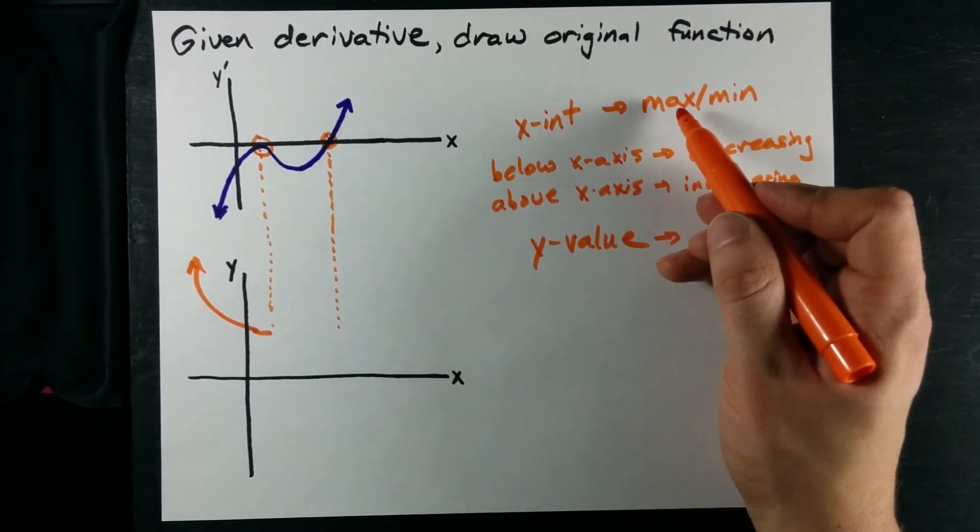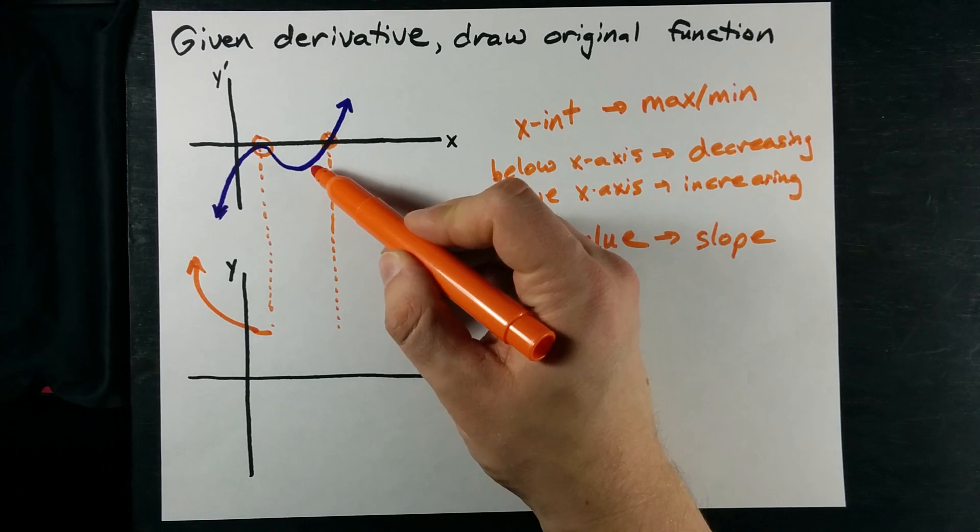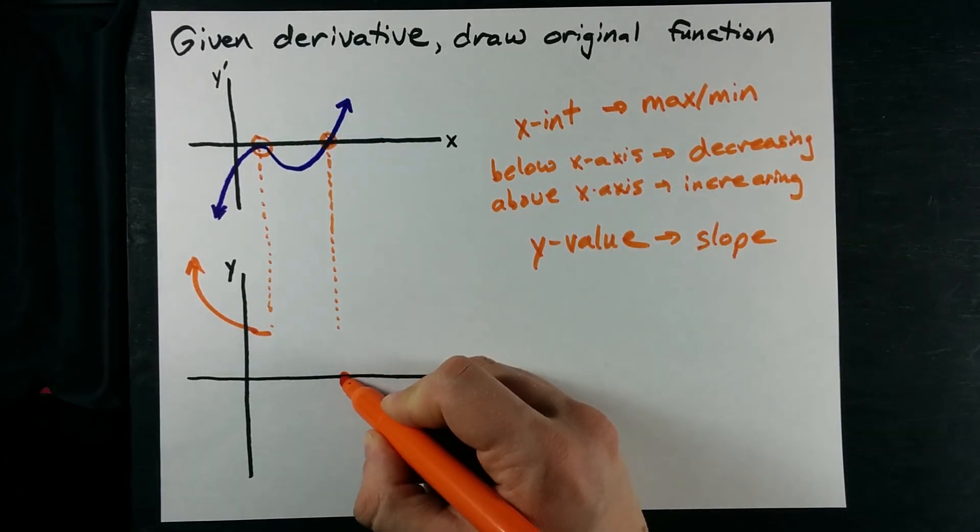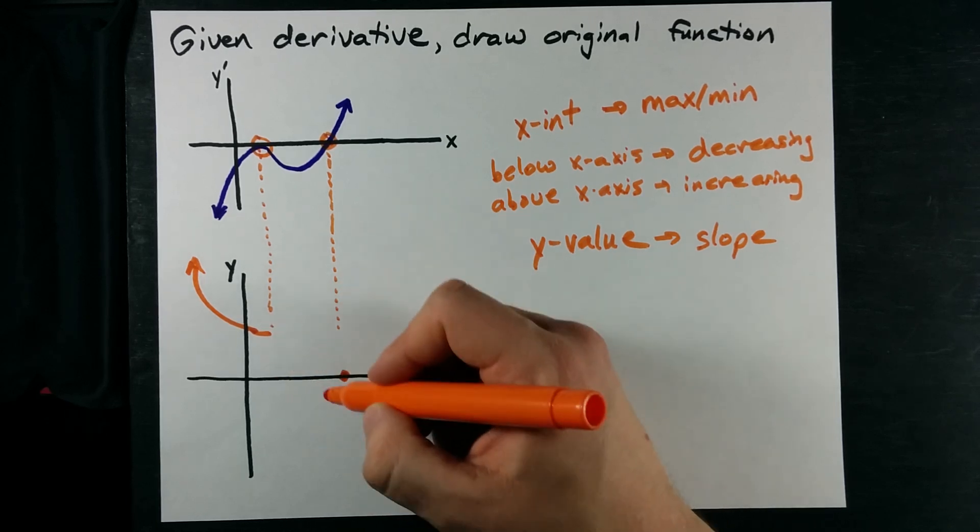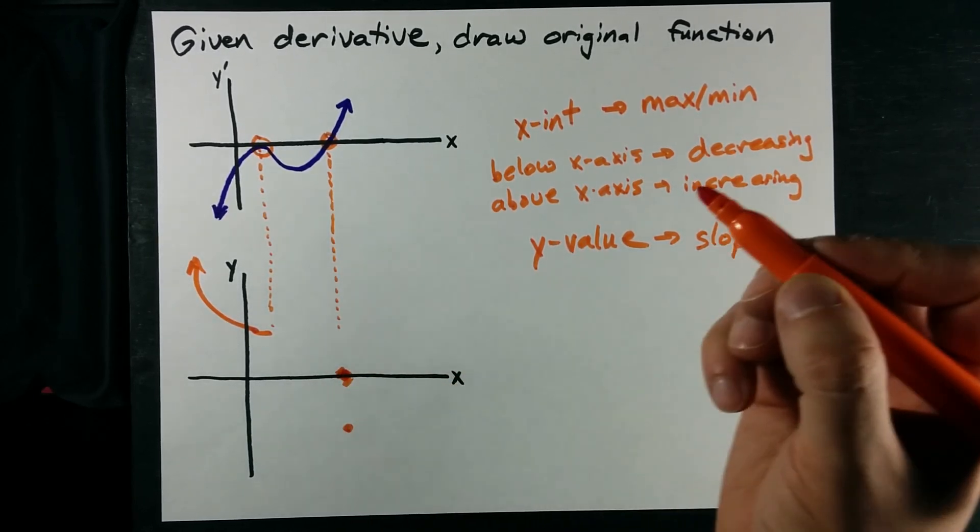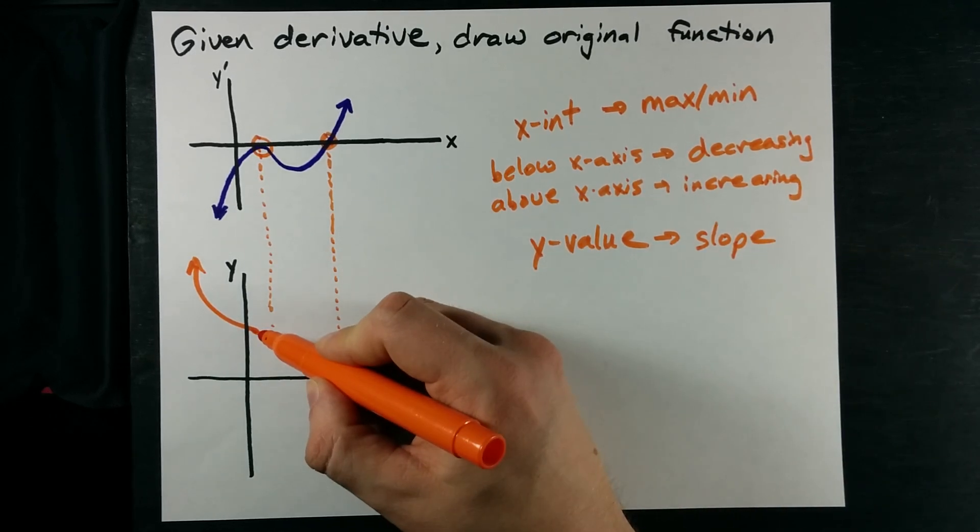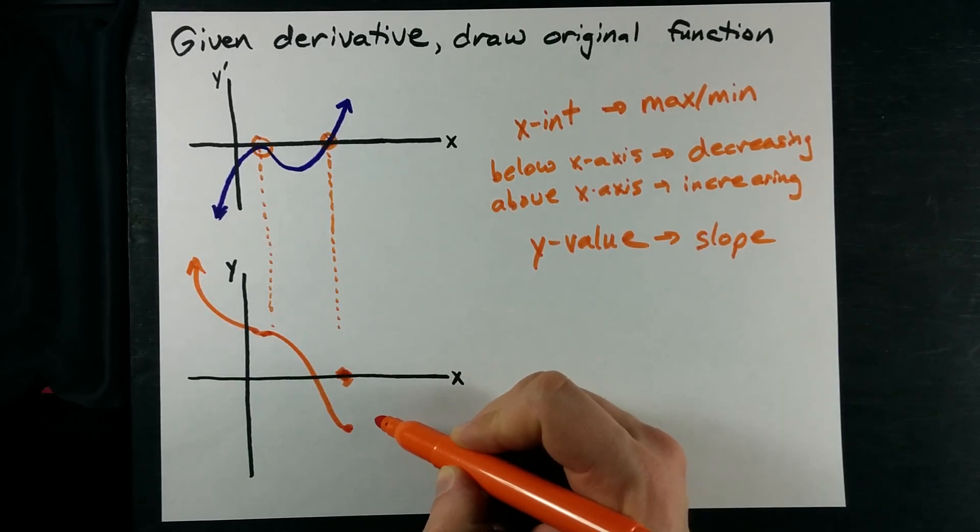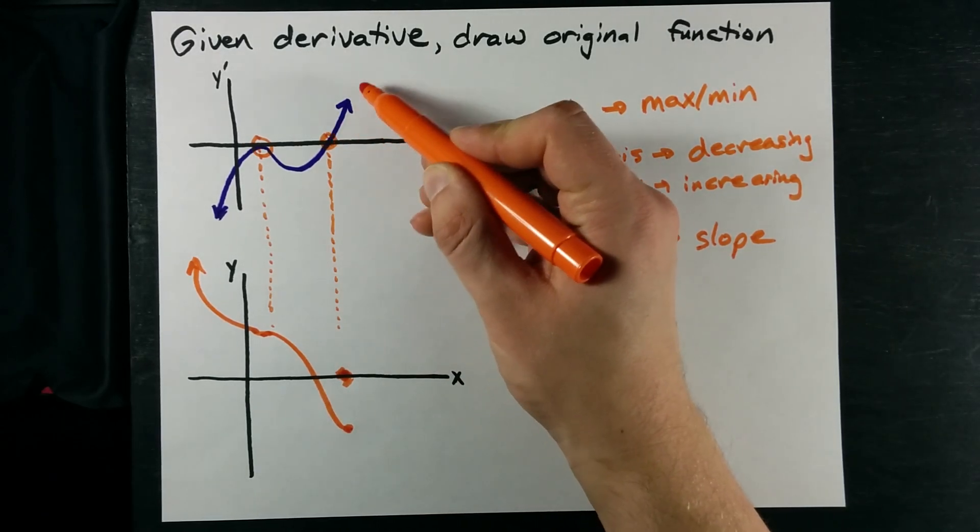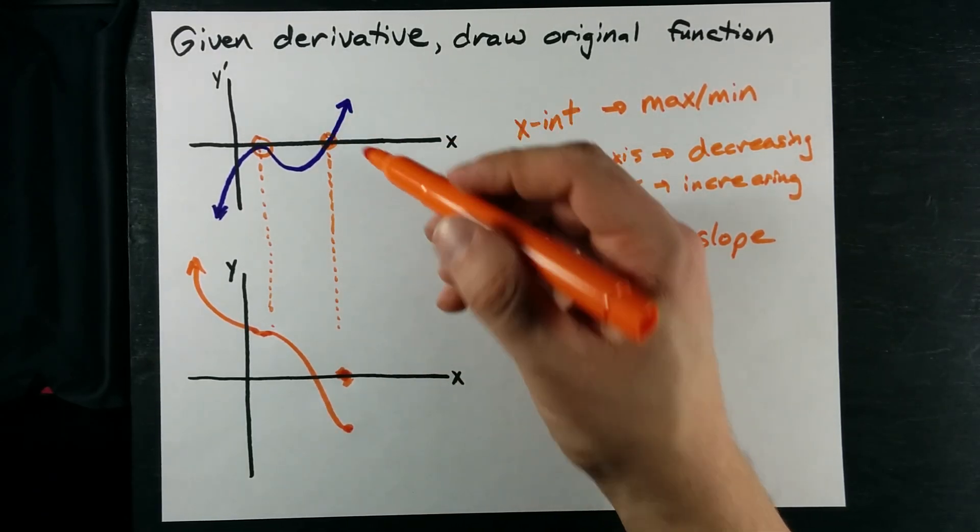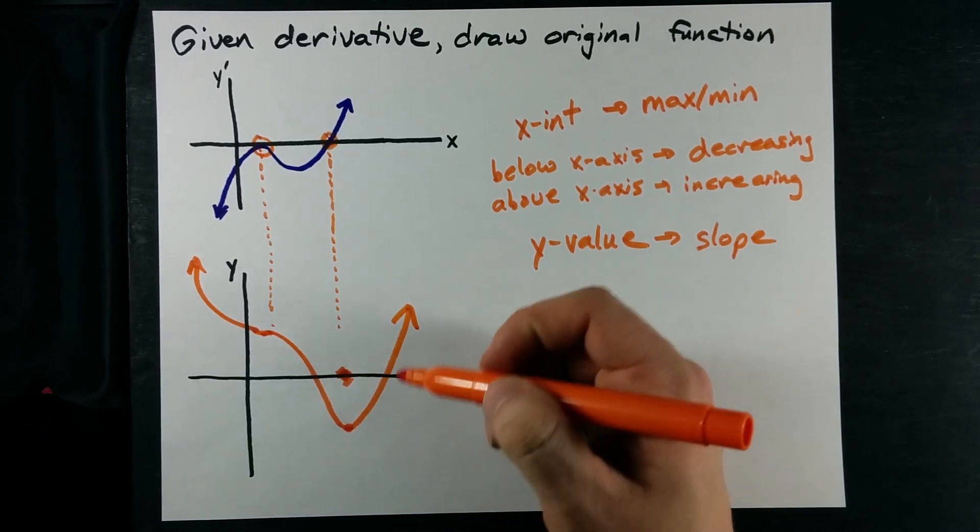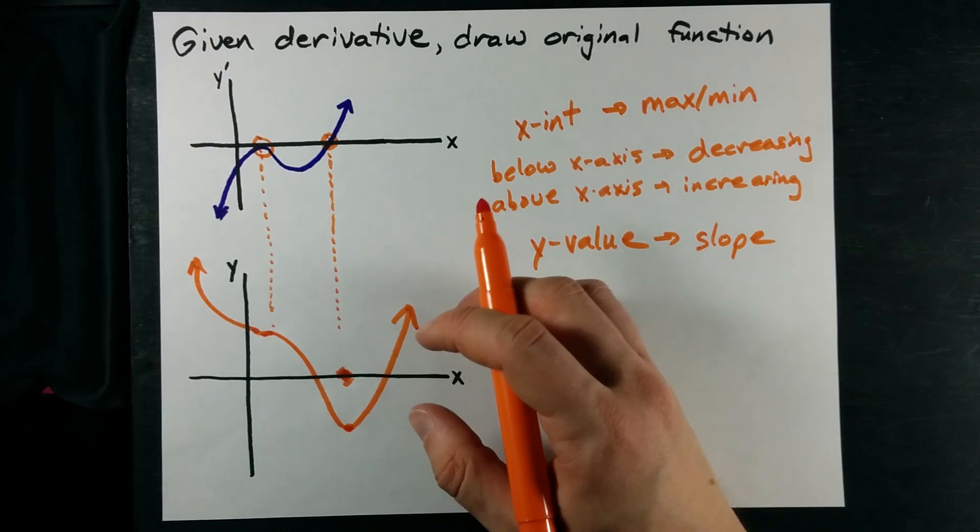Until I get to this point, which is an x-intercept on the derivative. x-intercepts on the derivative become maxes or mins. And if I'm flipping from negative to positive, that means it's a minimum. Now, the minimum does not have to be on the x-axis. In fact, I'm going to remove that and just put it somewhere else arbitrarily. Decreasing to a minimum. And then, because my derivative is positive here, or above the x-axis, I know I have to be increasing.